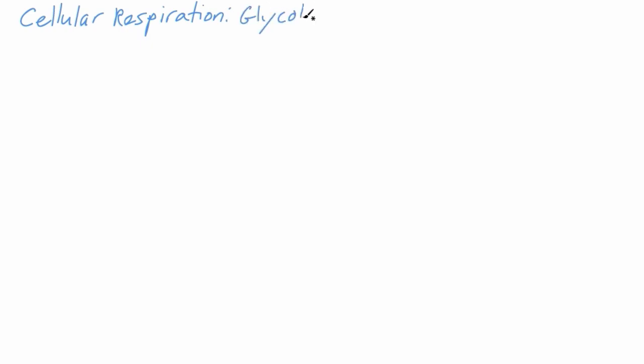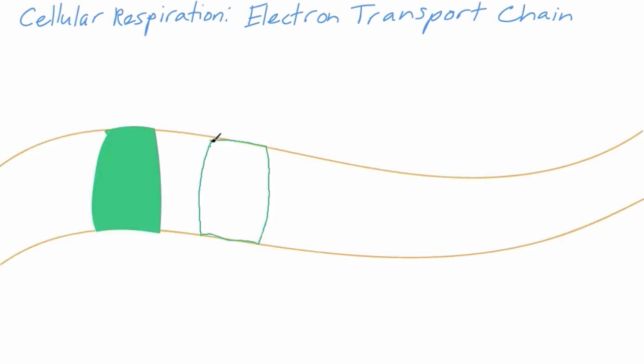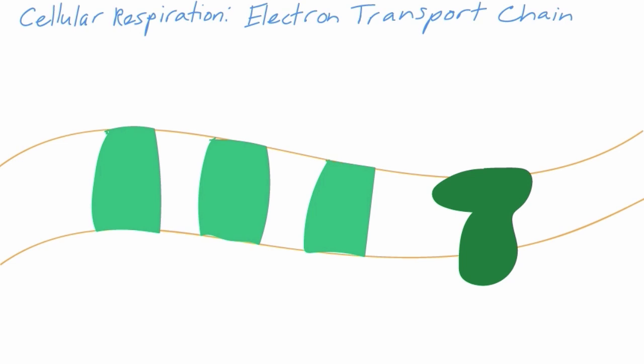The next and final step of cellular respiration is the electron transport chain. This step occurs across a membrane, either the mitochondrial membrane for organisms with mitochondria, or the cellular membrane for single-celled organisms.